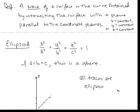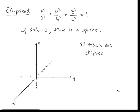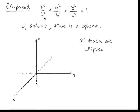Let's take a look at the first example: the ellipsoid. It's of the form x² over a² plus y² over b² plus z² over c² equals 1. You should recognize this as an extension into three dimensions of an ellipse equation — the equation of an ellipse in two dimensions is x² over a² plus y² over b² equals 1. Note that if a equals b equals c, this is a sphere.